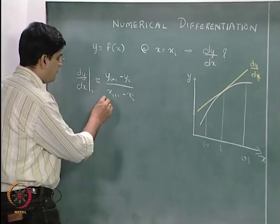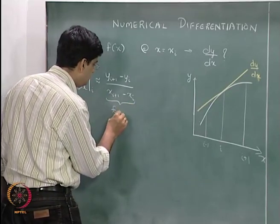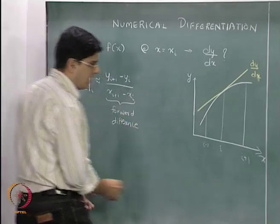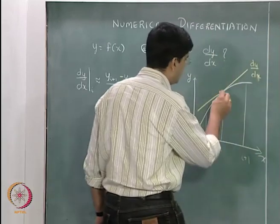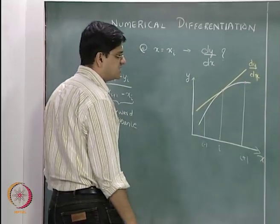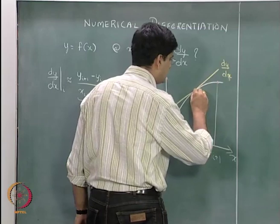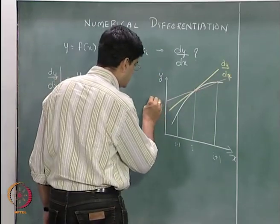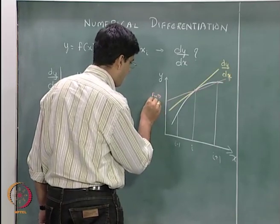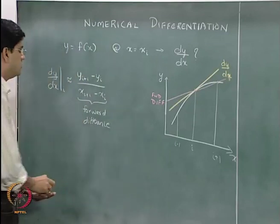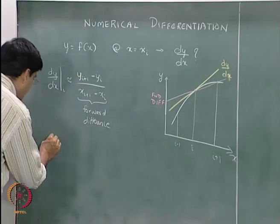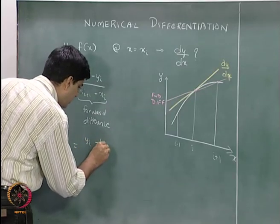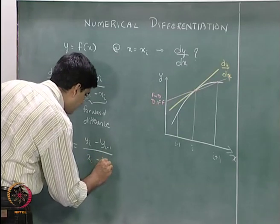This is the forward difference form, and it can be represented as the slope of the line joining the points (x_i, y_i) with the point (x_i+1, y_i+1). Alternatively, we can write dy by dx at i as y_i minus y_i-1 divided by x_i minus x_i-1.